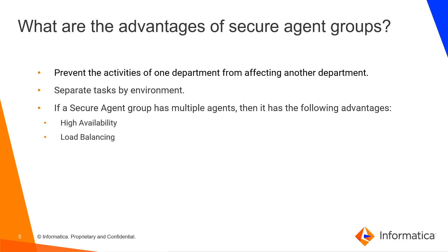If a Secure Agent Group has multiple Agents, then it has the following advantages. High Availability: when a job is started, if at least one Secure Agent is up and running, then it should execute normally. Load Balancing: execution of various tasks will be distributed between multiple Agents in a round-robin fashion.